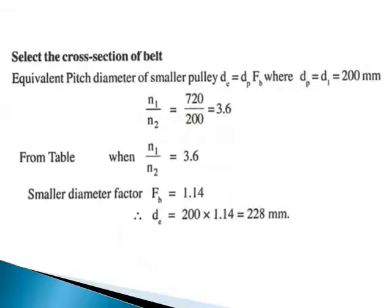Next, find the equivalent pitch diameter of the smaller pulley de. Select the cross section of the belt. de = dp × fb, where dp = d1 = 200 millimeters. The velocity ratio N1/N2 = 720/200 = 3.6. The correction factor fb = 1.14 (from table, for the smaller diameter). Therefore, de = 200 × 1.14 = 228 millimeters.